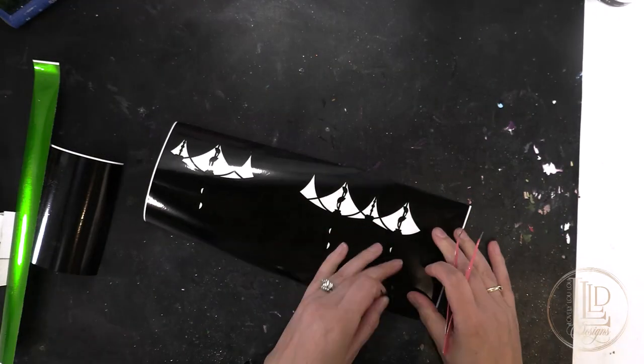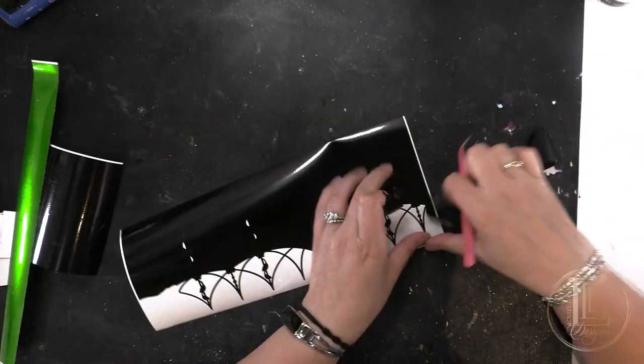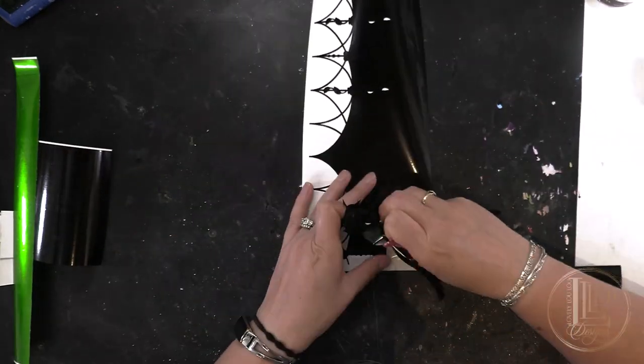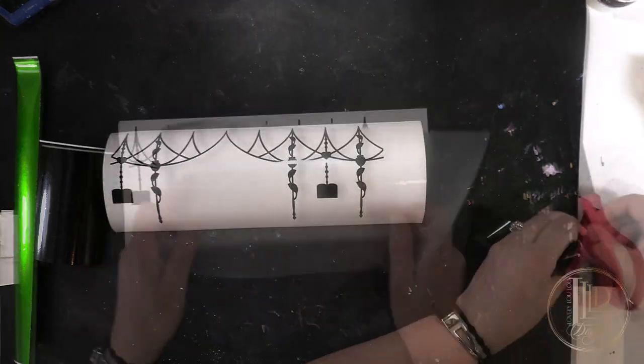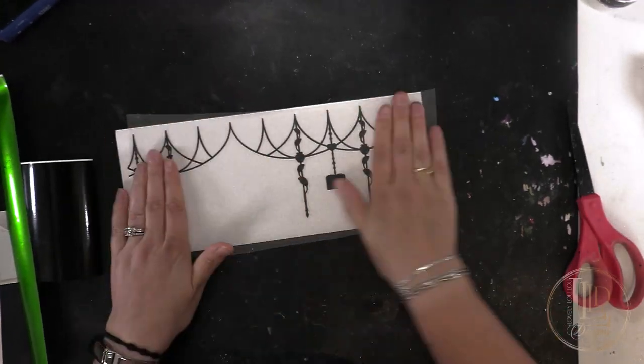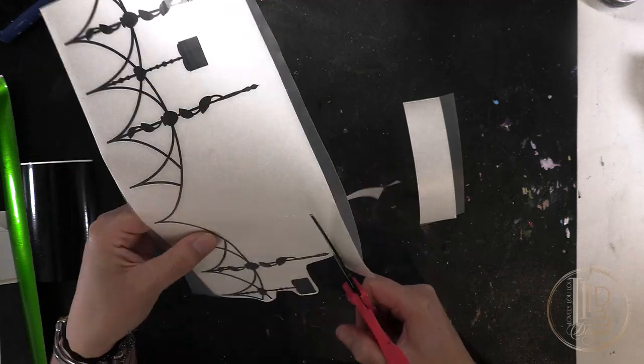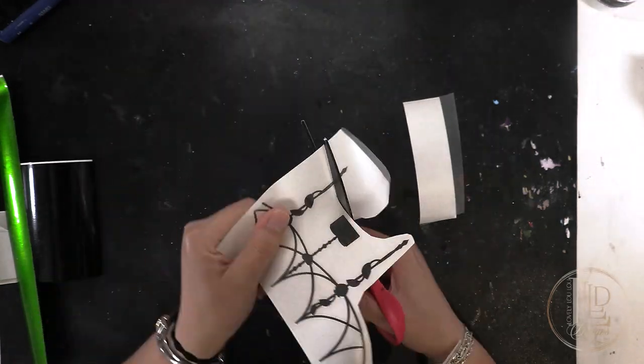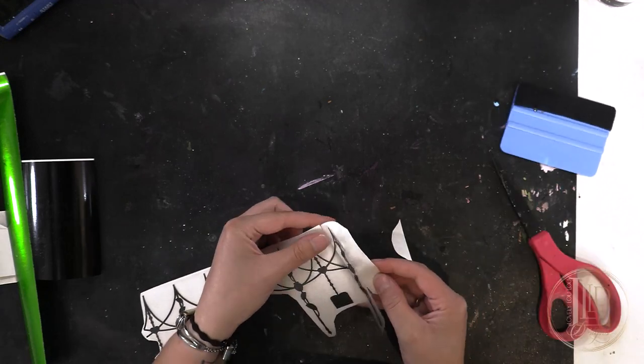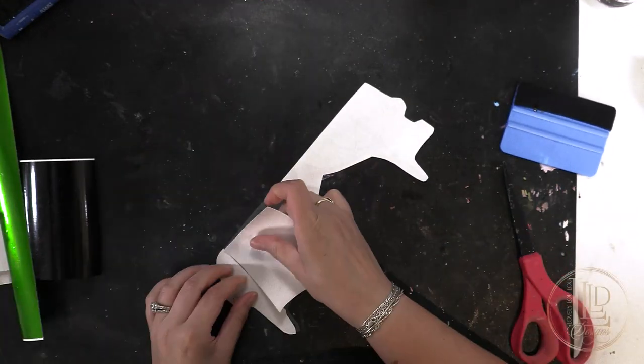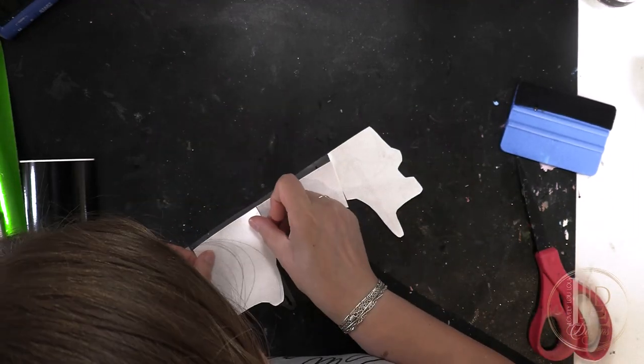When applying the decals, I prefer to start with the charm chain since I find it easier to center the quote to the charm chain than it is to center the charm chain to the quote. I begin by weeding the black base layer of the chain and then I apply the transfer tape. Next, I use my scissors to cut away excess backing paper and tape, being careful not to accidentally cut the vinyl. Then I remove the backing paper and cut it into small sections. This will allow me to apply the charm chain one section at a time, which I find makes it easier to keep the design straight and achieve a seamless pattern.